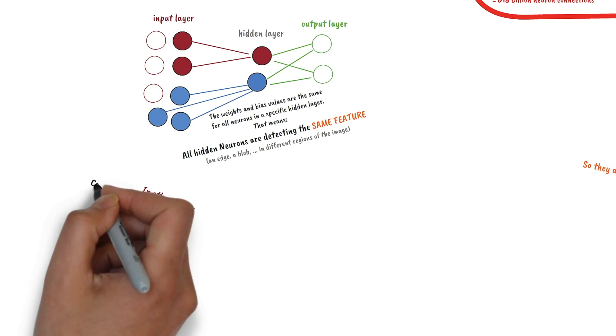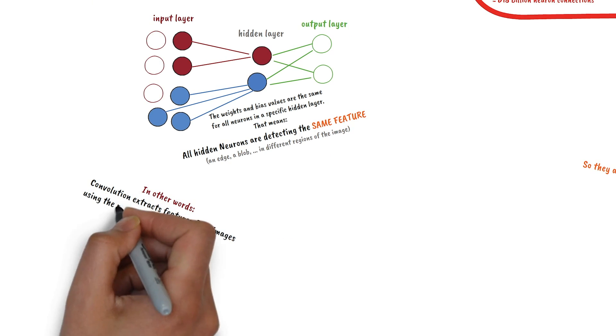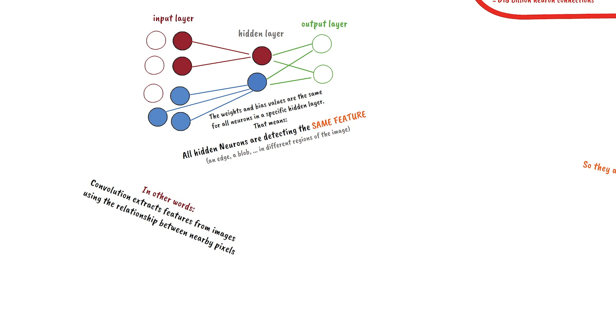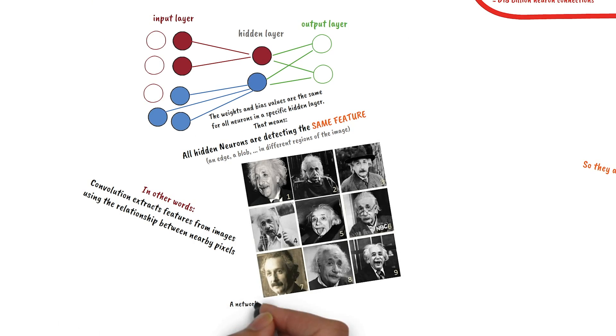That means that convolution can extract features from images by using the relationship between adjacent pixels. So a network trained with Einstein can detect him anywhere in an image.